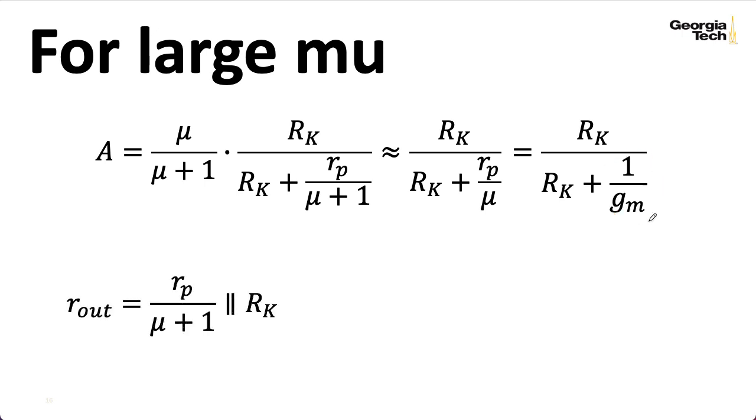Similarly, if we take a look at the output impedance, if mu is large, mu plus one is approximately mu. I can replace RP over mu with one over GM. And again, the only quantity we need here is that transconductance gain. I just thought that was interesting.